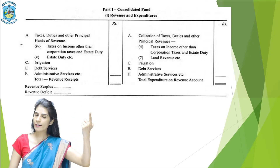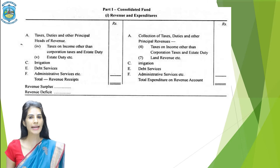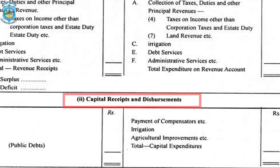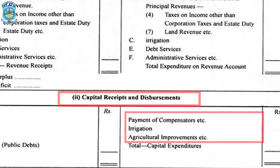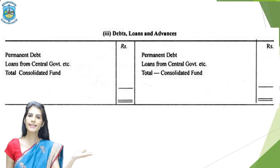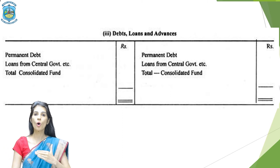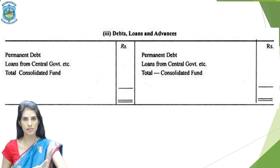The second part of the Consolidated Fund is Capital Receipts and Disbursements, which is mainly for Agriculture and Irrigation — whatever receipts the Government is getting and whatever disbursements the Government is doing basically on Agriculture and Irrigation. The third part of the Consolidated Fund of India is Debt, Loans and Advances. This includes all the borrowings by the Government and their repayment, and also all the Loans and Advances paid by the Government to the citizens and their recoveries. So Consolidated Fund has three parts: Revenues and Expenditures, Capital Receipts and Disbursements, and Debt, Loans and Advances.